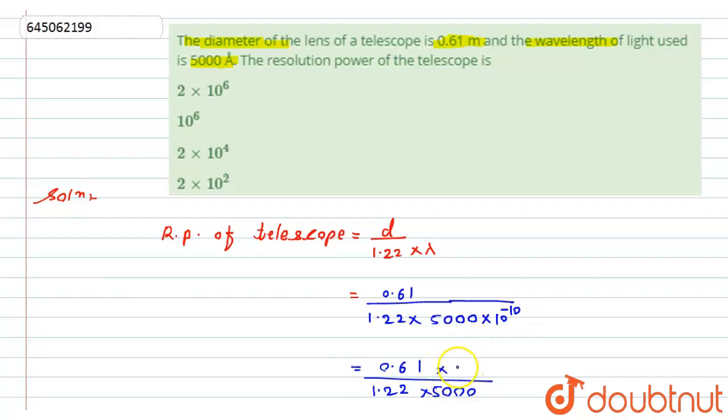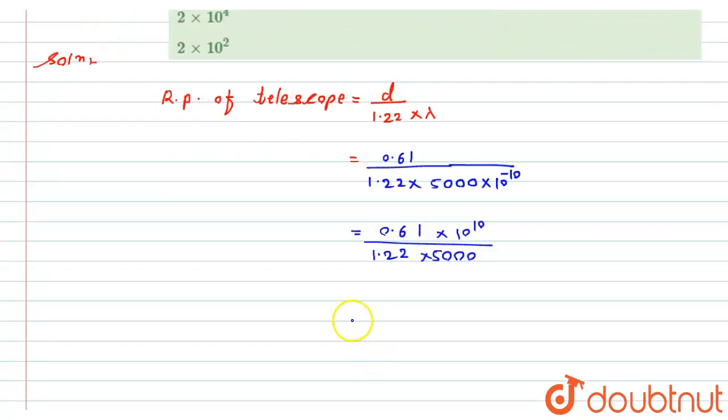So after dividing or simplifying it we get 0.0001 into 10 raised to 10, which can also be written as 1 into 10 raised to 6, or I can write 10 raised to 6.